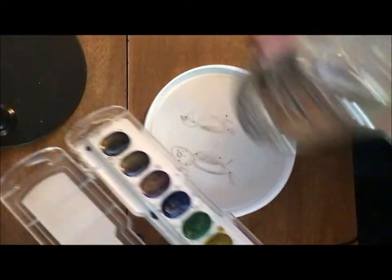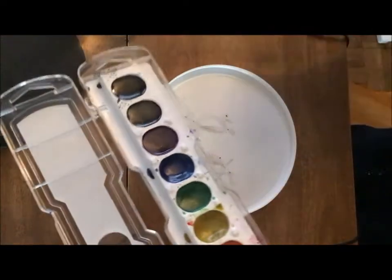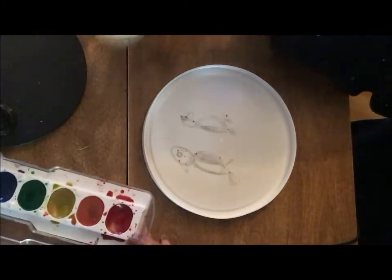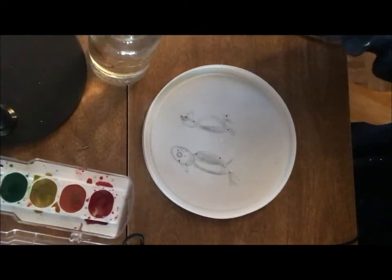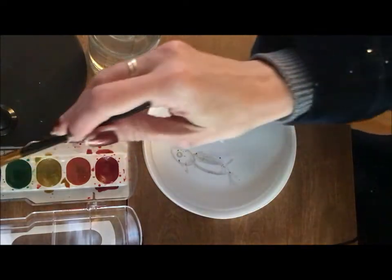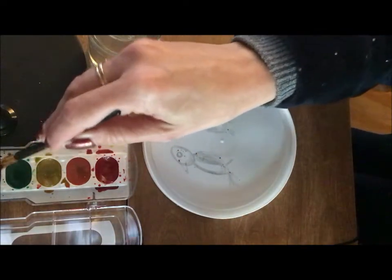Now I need water and some paints. I want to make the blue ice that they were slipping around on. Remember, it can be any color you want.